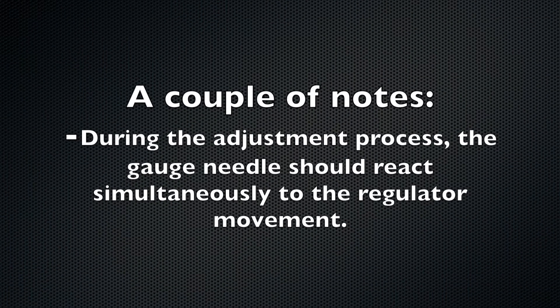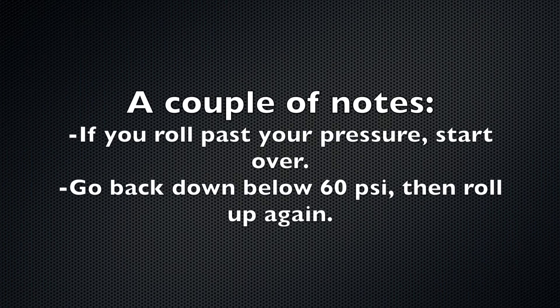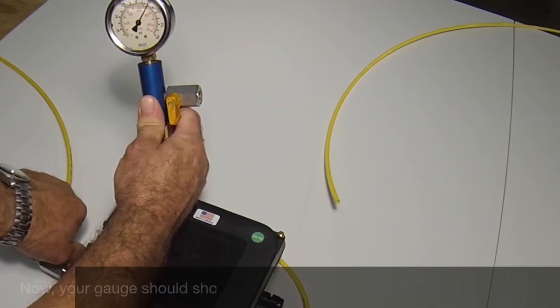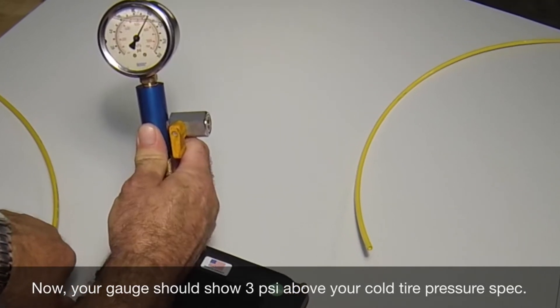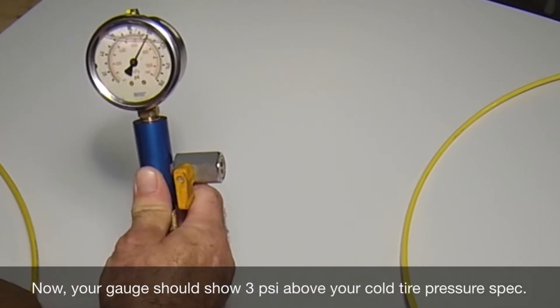A couple of notes at this stage. During the adjustment process, the gauge needle should react simultaneously to the regulator knob movement. And if you were to go beyond the desired target pressure, you must start over. The pressure must be returned to below 60 psi, then increase slowly until the desired target pressure has been reached. If done correctly, your gauge should now read 3 psi above your cold tire pressure spec.